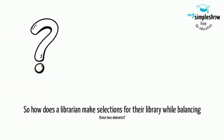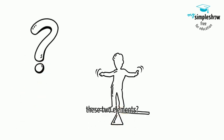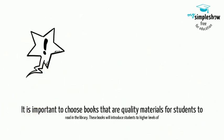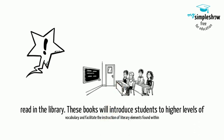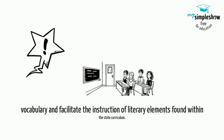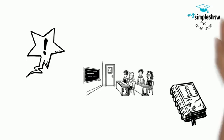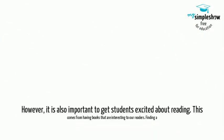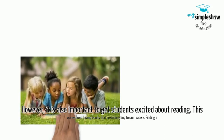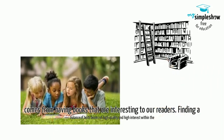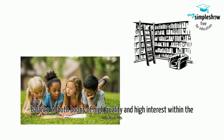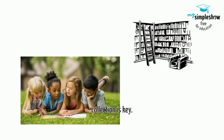So how does a librarian make selections for their library while balancing these two elements? It is important to choose books that are quality materials for students to read in the library. These books will introduce students to higher levels of vocabulary and facilitate the instruction of literary elements found within the state curriculum. However, it is also important to get students excited about reading. This comes from having books that are interesting to our readers. Finding a balance of both books of high quality and high interest within the collection is key.